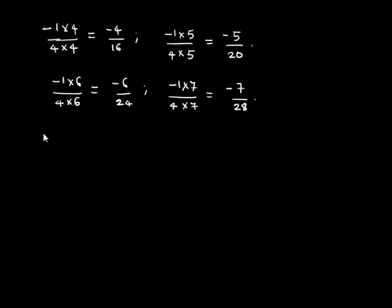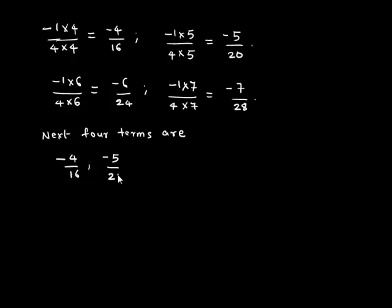Therefore, the next 4 terms are negative 4 upon 16, negative 5 upon 20, negative 6 upon 24, and negative 7 upon 28.